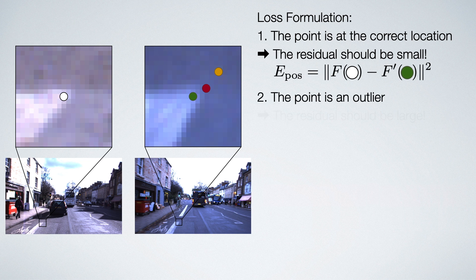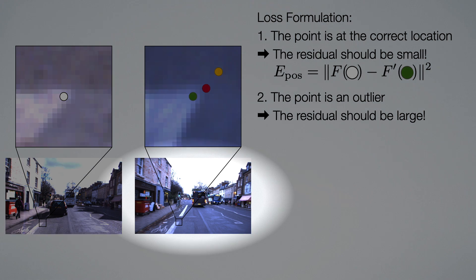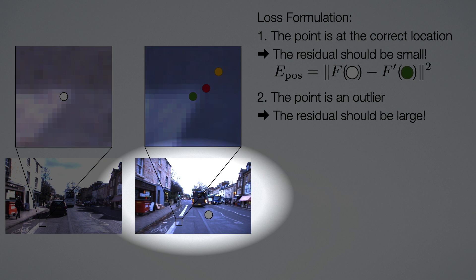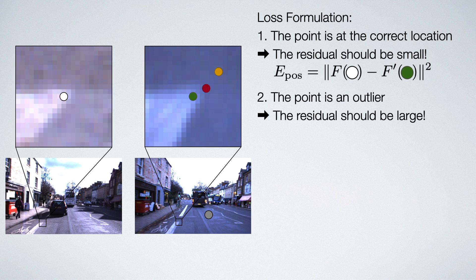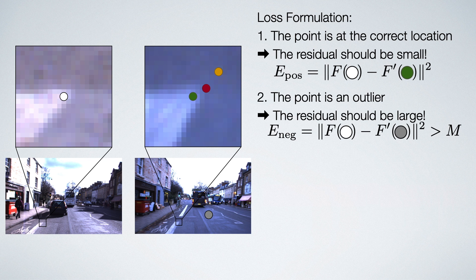Second, the point is an outlier. Then the residual should be large. To enforce this, we sample a random negative point across the whole image and say that the features at these positions should be further apart than a margin m. In practice, this is realized with a hinge loss.